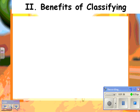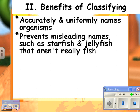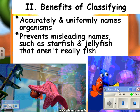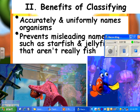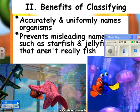So what are the benefits of classifying, aside from it being really cool? It accurately and uniformly names organisms. For example, it prevents misleading names like starfish and jellyfish. These things are not actually fish. So Marlin and Dory and Nemo are all fish — they have vertebrae, they have scales. And these folks are not fish. We just call them that.